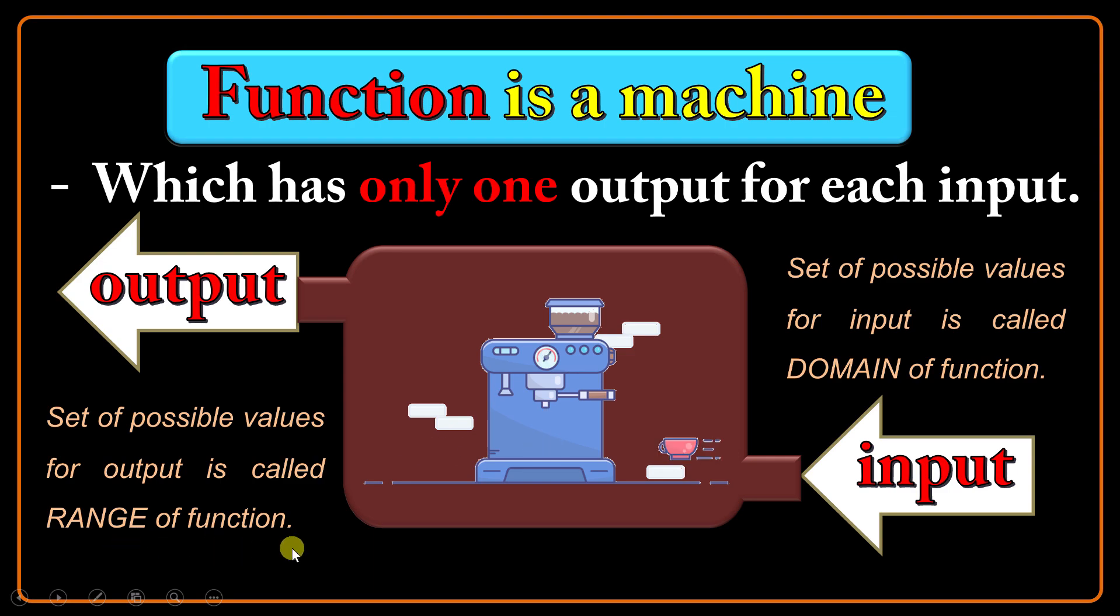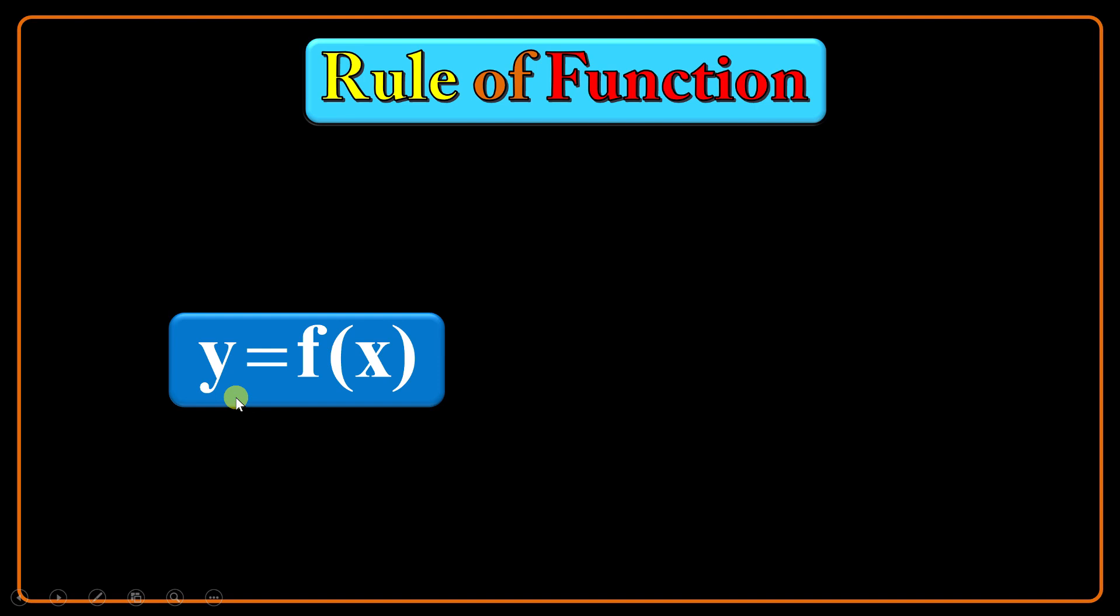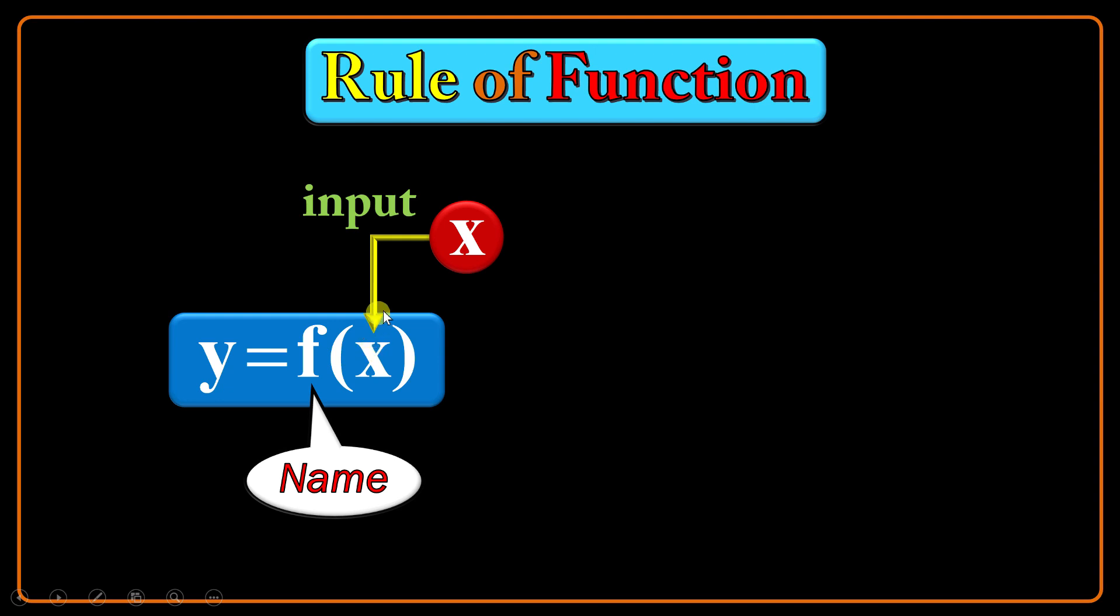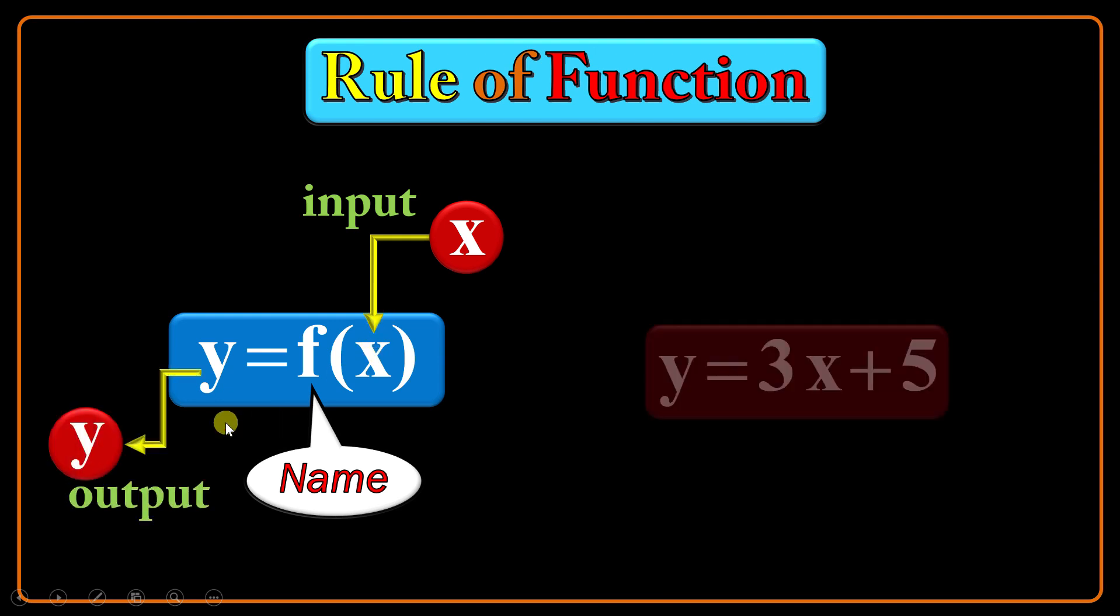Rule of function: I write y = f(x) and I read that y is a function of x. So the name of this function in this case is f. It could be g, could be h, and so forth. x is the input of this function and y is the output of this function.